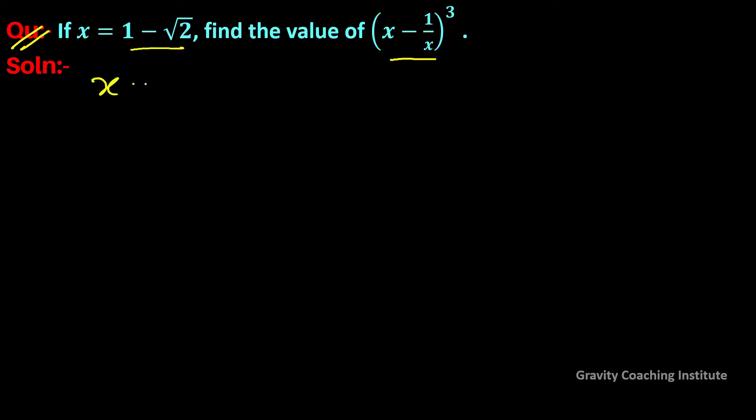Here given x is equal to 1 minus root 2, and 1 upon x is equal to 1 upon 1 minus root 2. Rationalizing its denominator, we get...